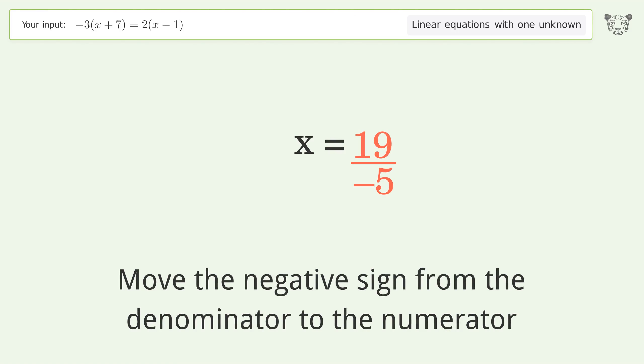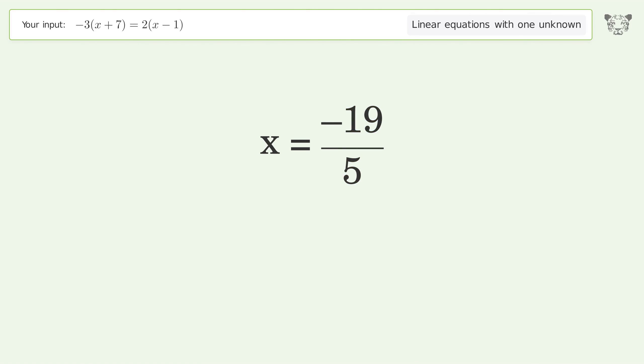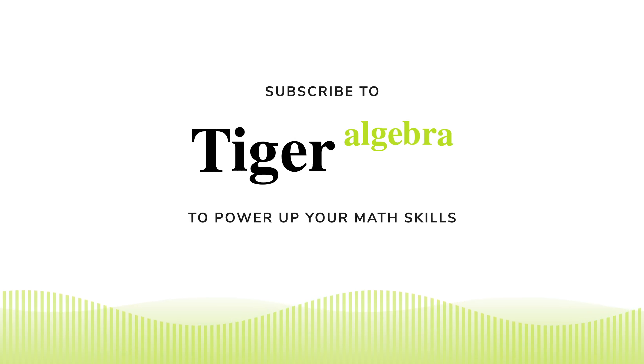Move the negative sign from the denominator to the numerator. And so the final result is x equals negative 19 over 5. I'll see you next time.